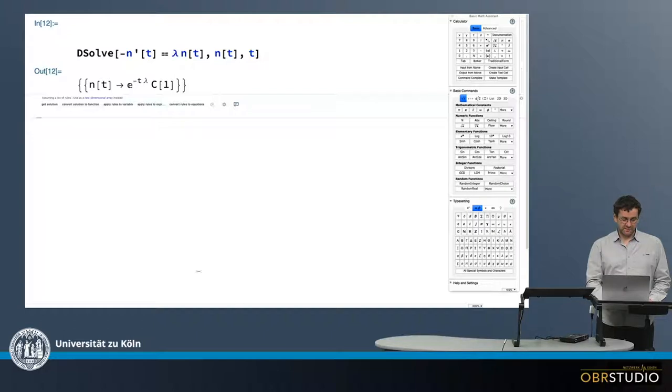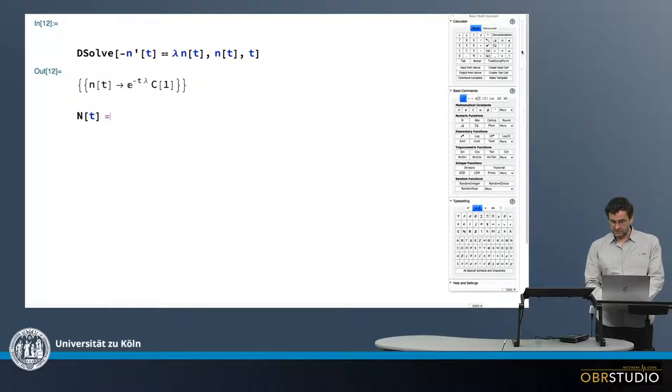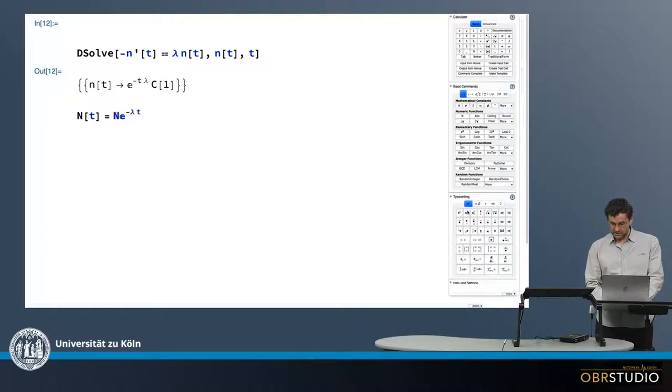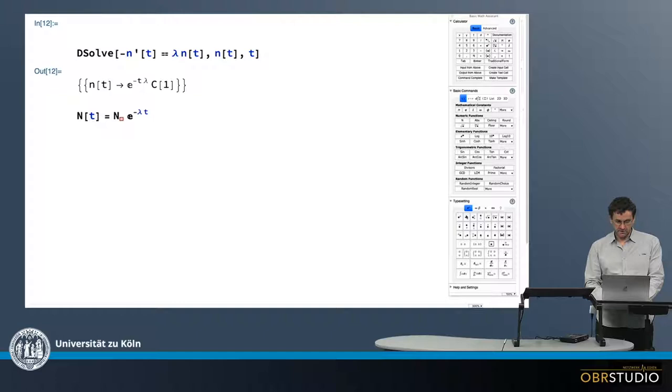So if I would write this sort of final version of this equation, it would be n of t equals e to minus lambda t, with the initial amount, which is usually designated as n zero.